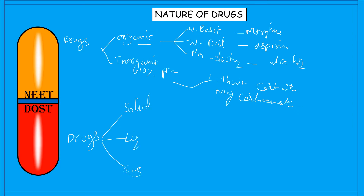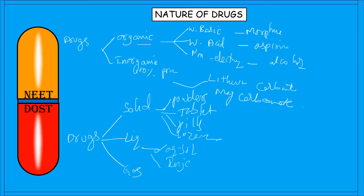Based on state of matter, drugs are also classified into three types: solids, liquids, and gases. Solid drug forms include powders, tablets, pills, and lozenges. Liquid drugs include aqueous solutions, injections, and drops. Gaseous drugs include inhalants taken through the nasal cavity, commonly used by asthma patients.